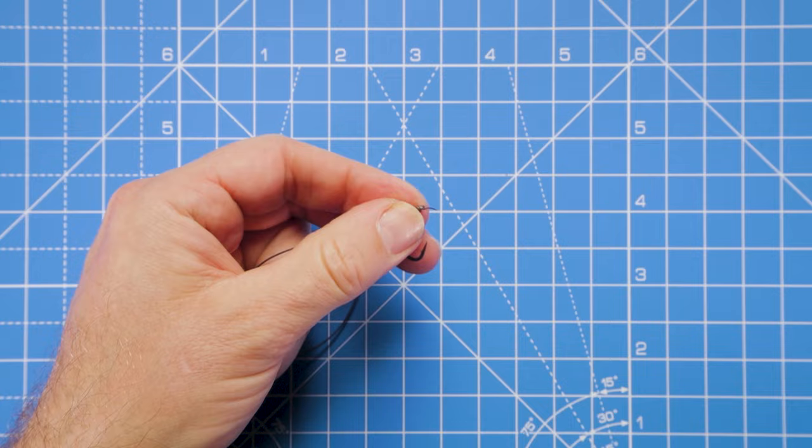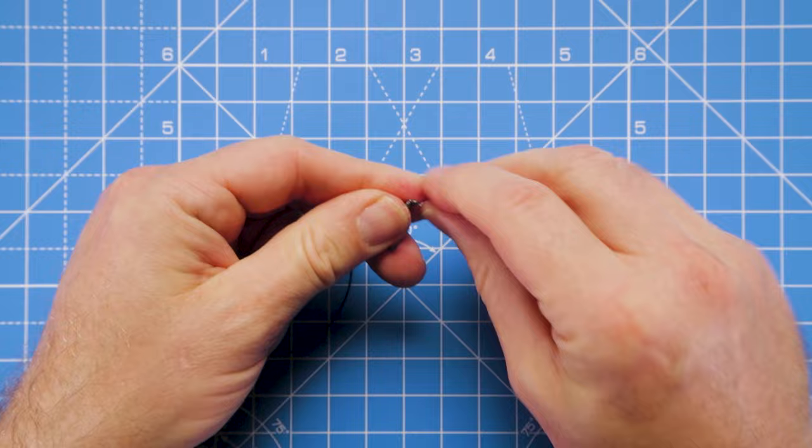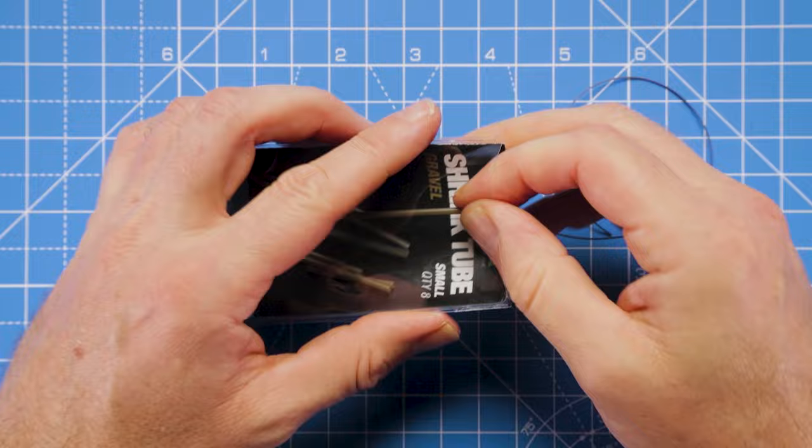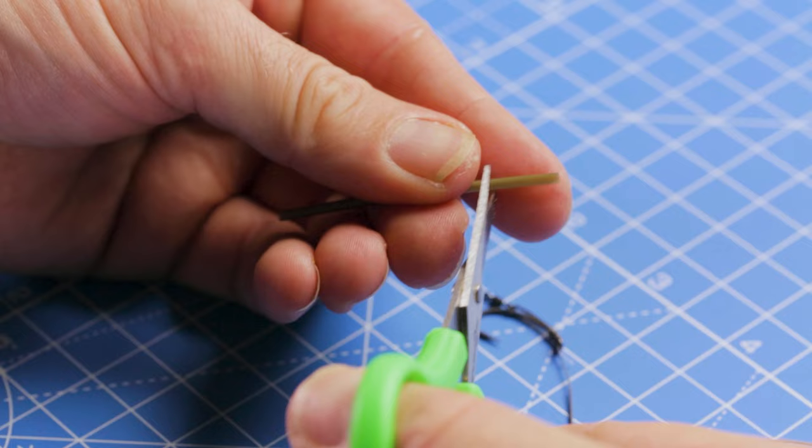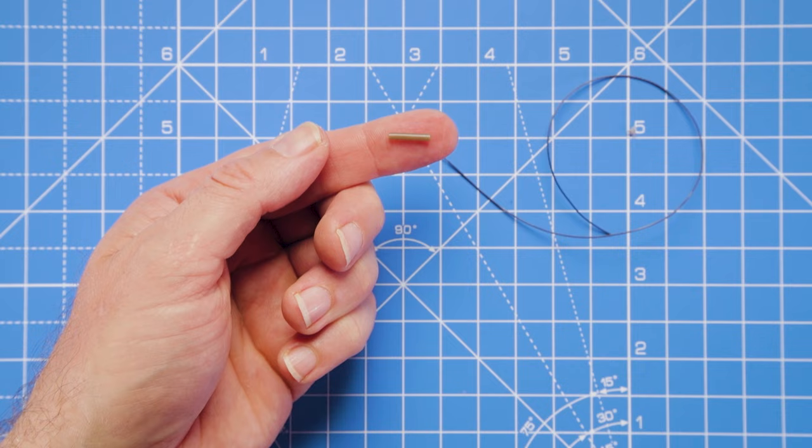There's no need for that. Now we can take a small piece of the shrink tubing to create a kicker to help the hook spin and turn in the fish's mouth. I'm going to cut that off fairly long, around about 12 mil of shrink tubing.